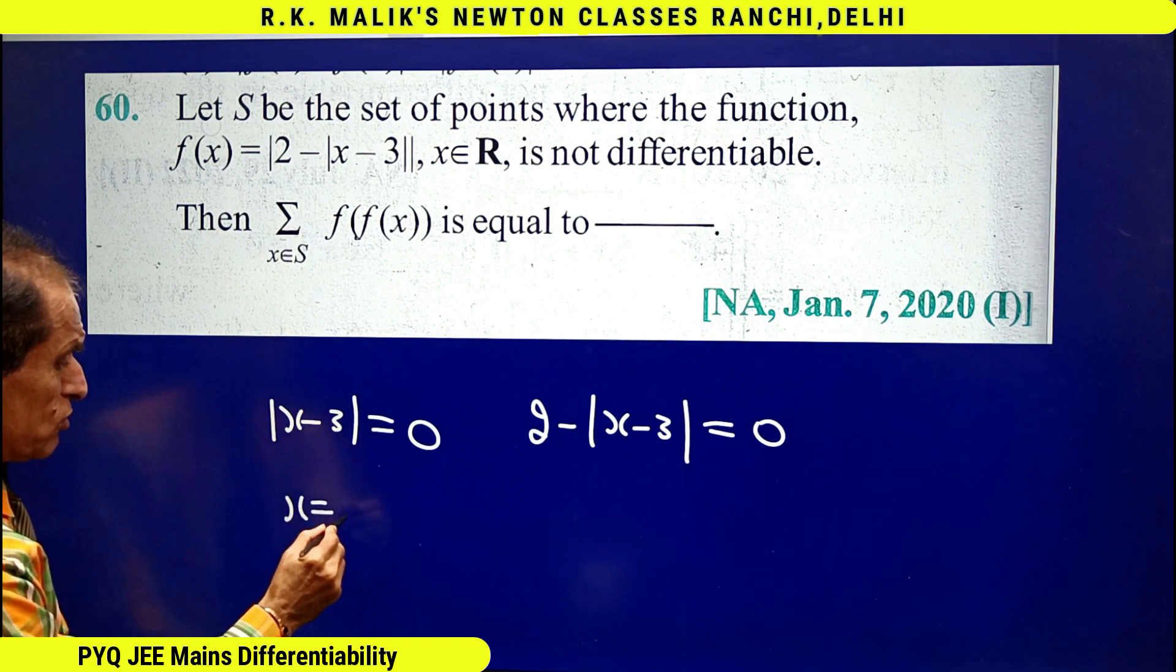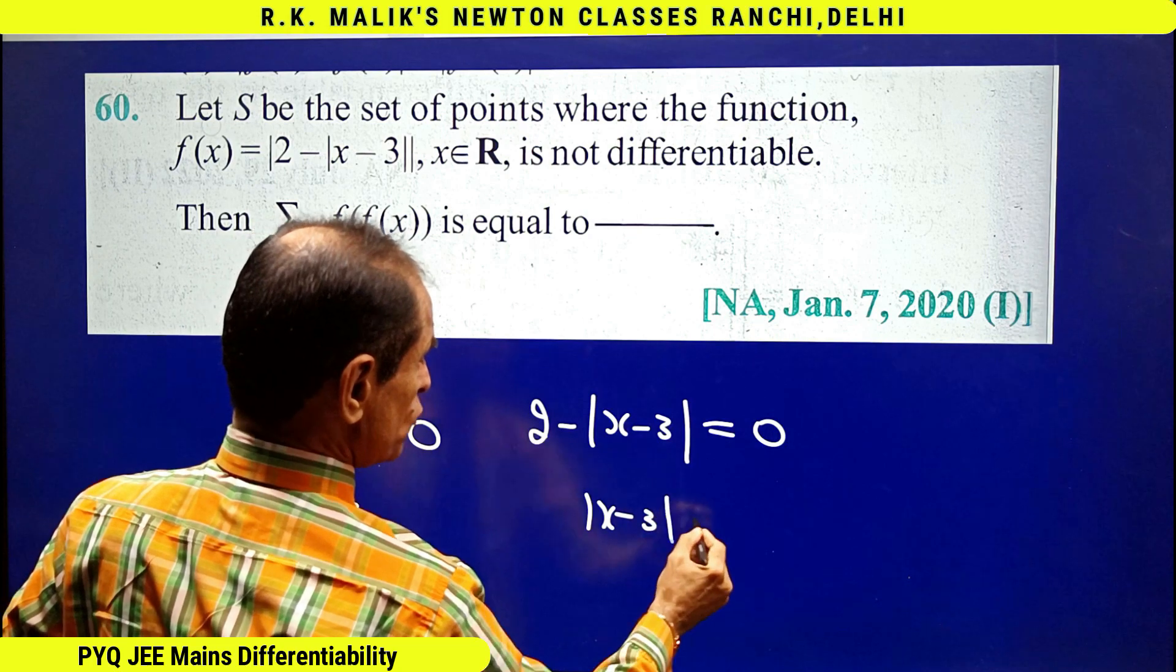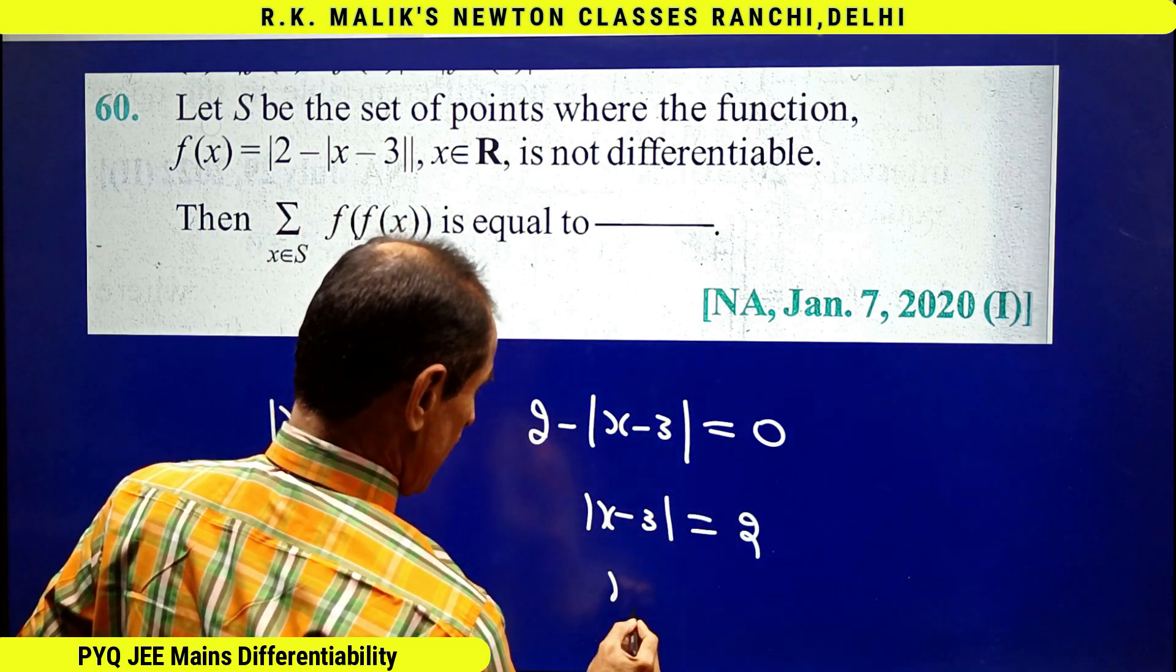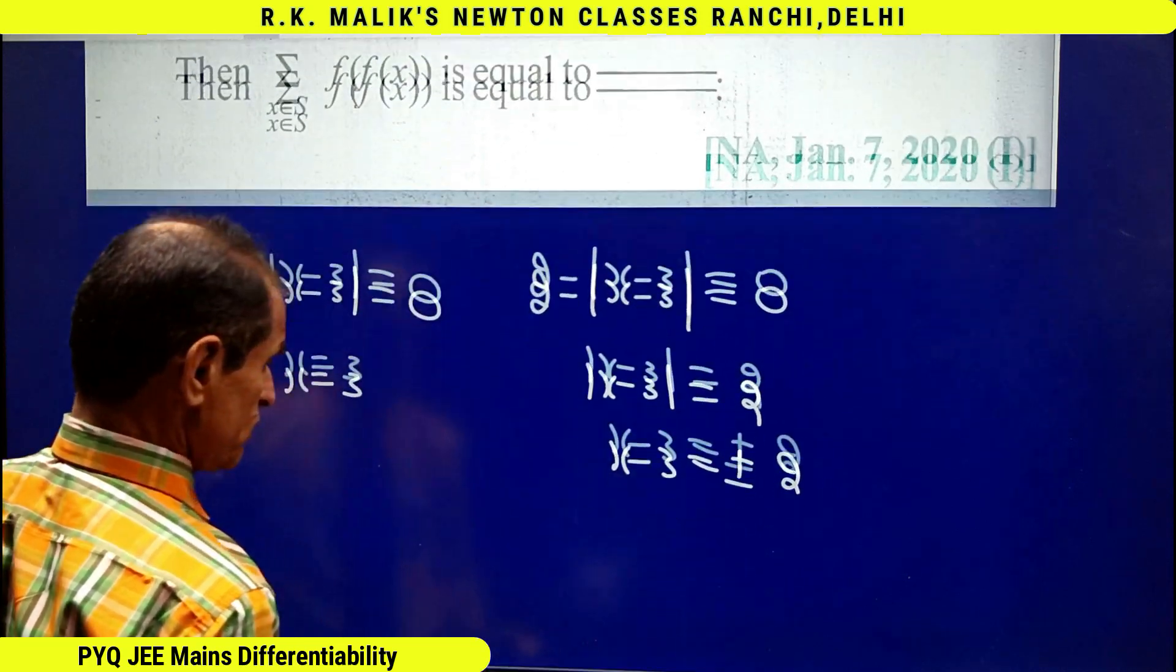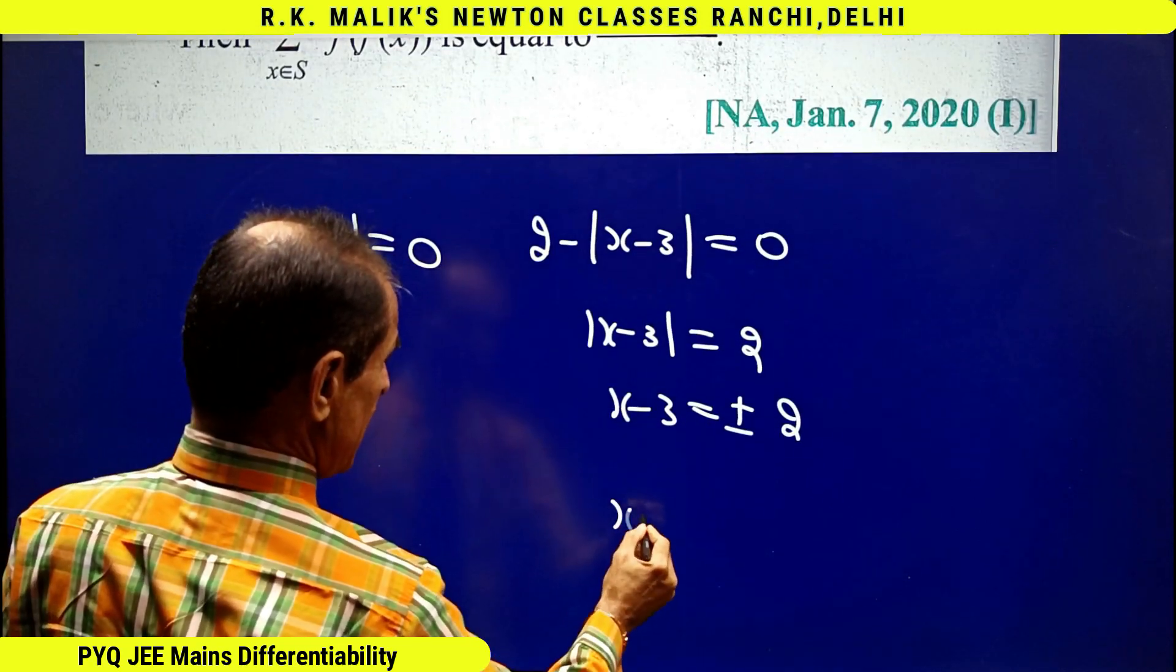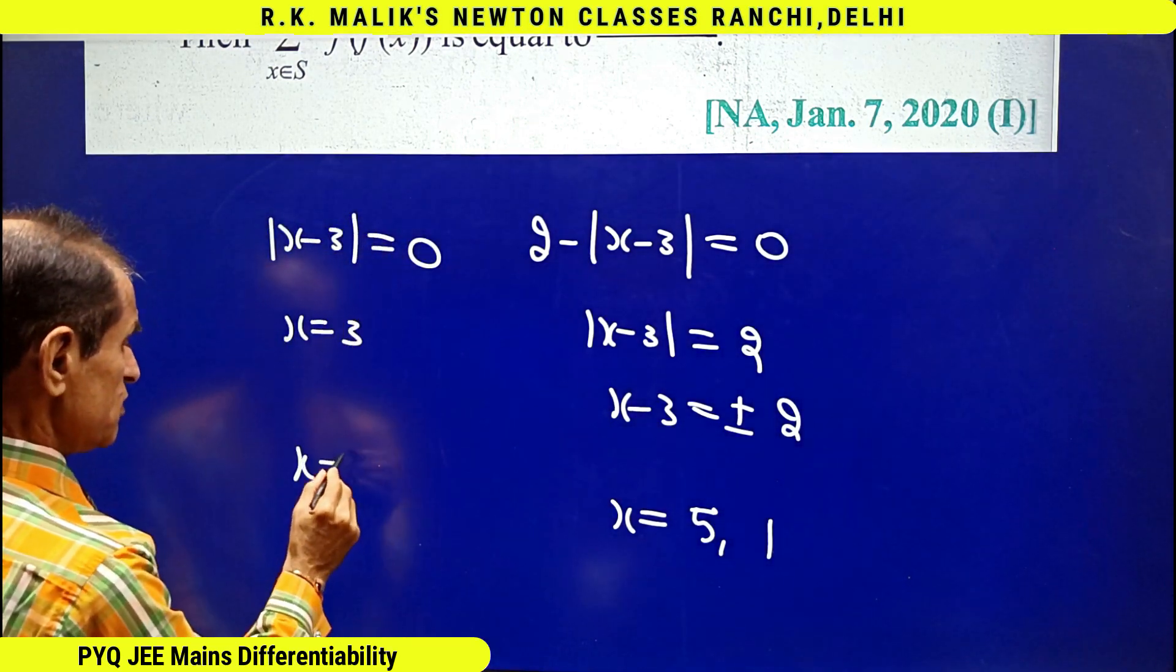This means x equal to 3, and this means mod of x minus 3 equal to 2, that is x minus 3 equal to plus minus 2, that is x equal to 5 and 1. Here x is 3.